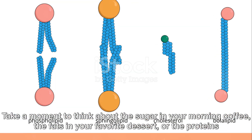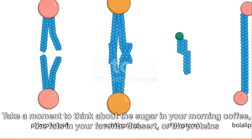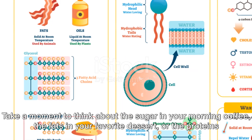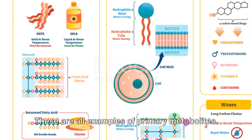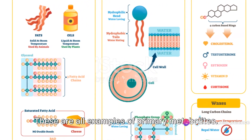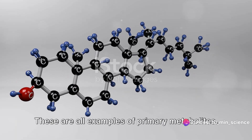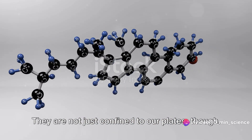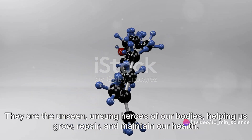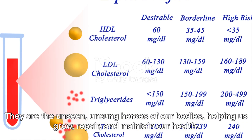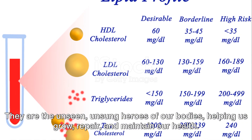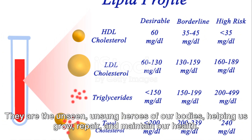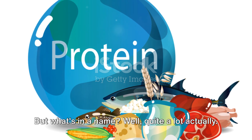Take a moment to think about the sugar in your morning coffee, the fats in your favorite dessert, or the proteins in your dinner. These are all examples of primary metabolites. They are not just confined to our plates, though. They are the unseen, unsung heroes of our bodies, helping us grow, repair, and maintain our health.